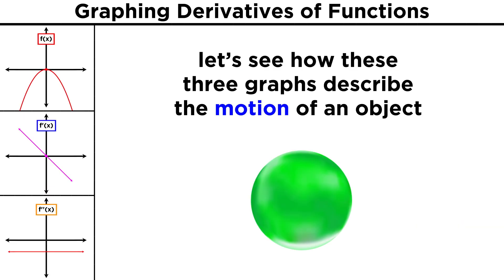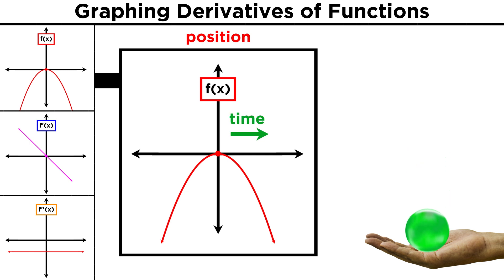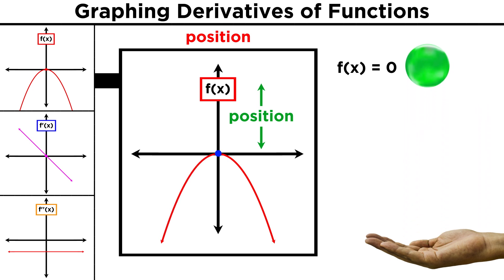This set of graphs perfectly illustrates the motion of a ball being tossed straight up in the air. Correlating the position function with this is easy — it goes straight up and then comes straight back down. The function looks like this because we are moving forward in time, and the value of the function gives us the position of the ball, which comes up and hits zero at the apex of the trajectory, and then falls back down.